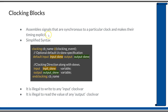A clocking block in SystemVerilog assembles signals synchronous to a particular clock and makes their timing explicit. Before going into the details of implementation, we will jump into an example and see how we can implement a clocking block so that you will be more clear with the practical usage of clocking blocks.